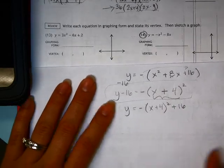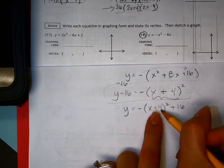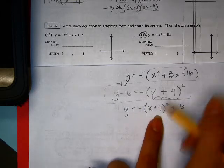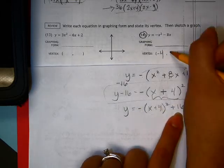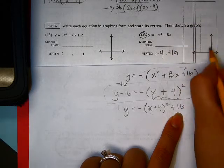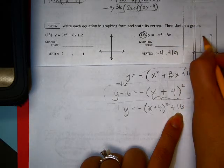So that is graphing form, and the vertex is therefore the opposite of in here. It has nothing to do with that, but always the opposite of here. And then whatever that number is here, so positive 16. So we have negative 4, positive 16.